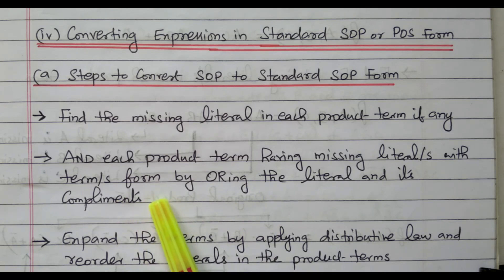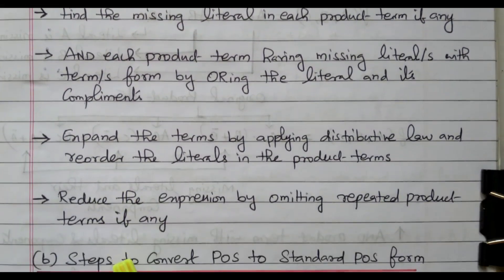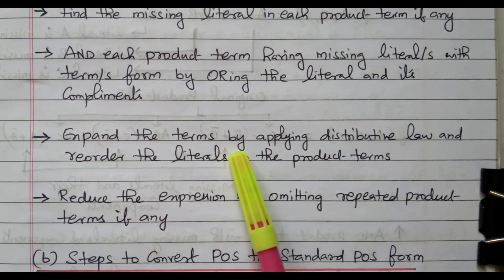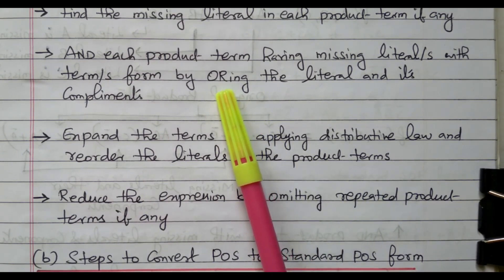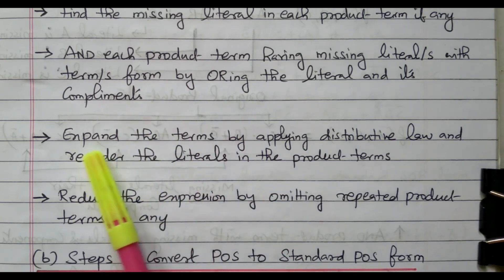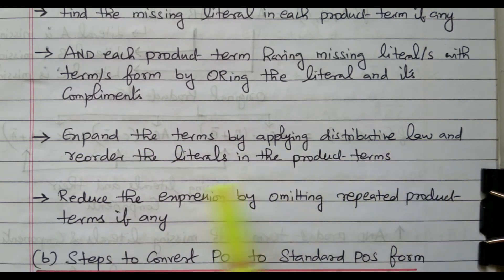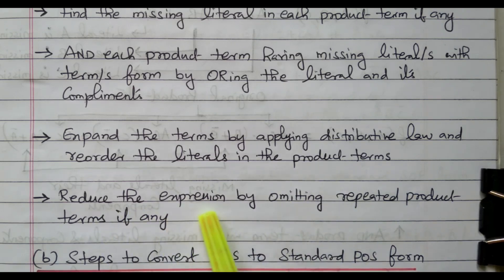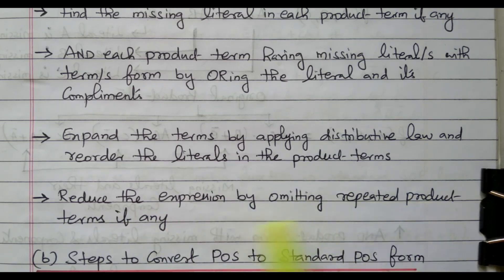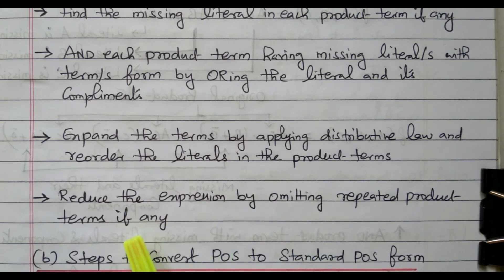So that the original expression will not vary. The next step is to expand the terms by applying the distributive law and reorder the literals in the product terms. After ORing the literal with its complement, we need to expand the term by applying the distributive law and reorder the literals in the product form. Then we will have all product terms containing all the literals. Reduce the expression by omitting any repeated product terms.